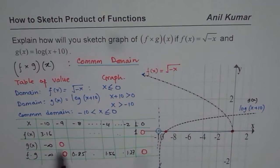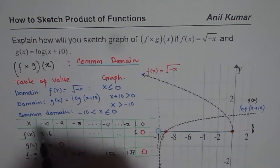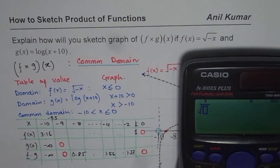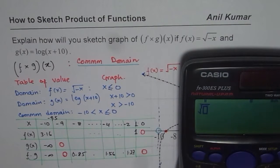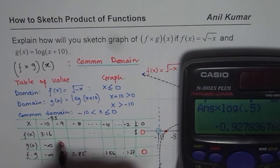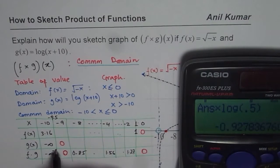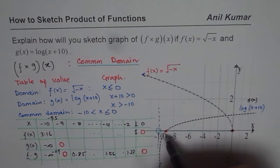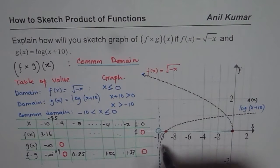Since we are going from 0 toward minus infinity, it is a good idea to also take a value like x equals minus 9.5. For minus 9.5: f of x is square root of 9.5, and g of x is log of 0.5, which is negative. That gives us approximately minus 0.9. So at x equals minus 9.5 we get a value close to minus 1.